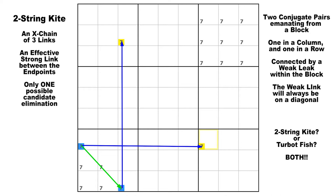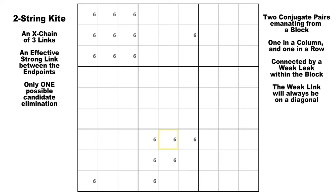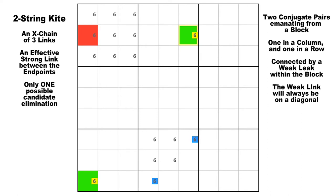The most important thing is that you see it one way or the other and make the candidate elimination. On candidate six, we have a strong link and another strong link, with the weakly-linked candidates in the same block. The elimination cell is identified, the two endpoints are colored, and the strong links are connected by a diagonal weak link in block eight. That's a two-string kite.